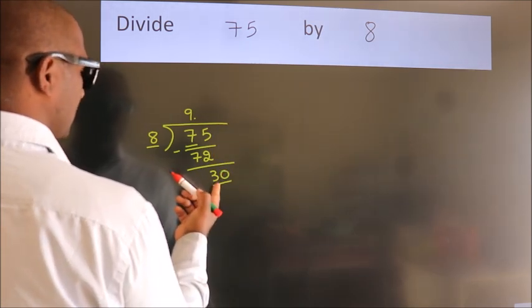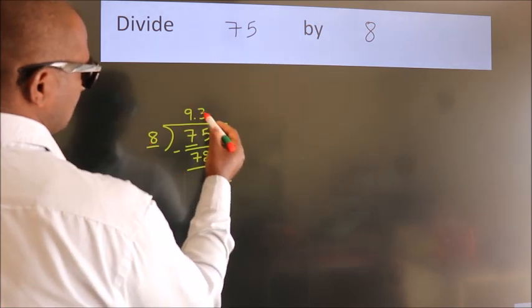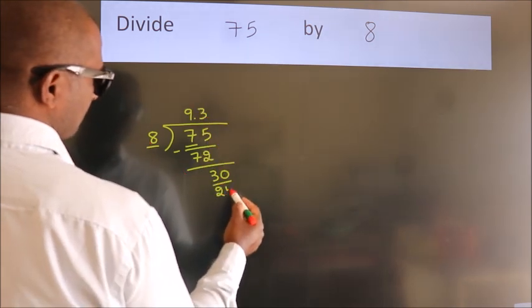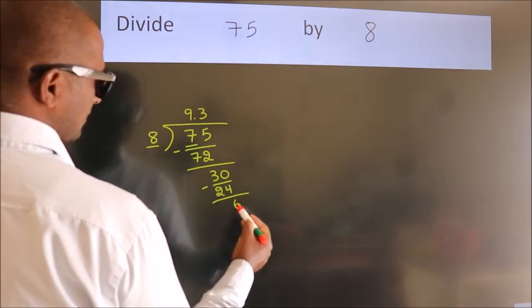A number close to 30 in the 8 table is 8 threes, 24. Now we should subtract. We get 6.